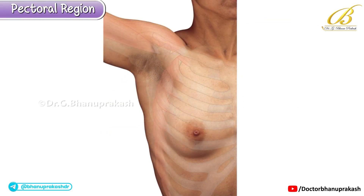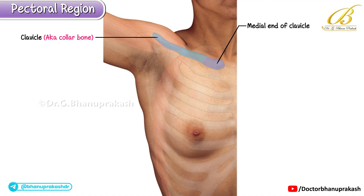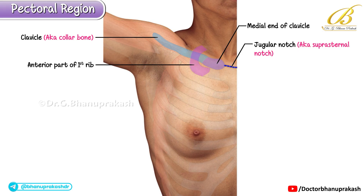Let's take a look at the cadaveric anatomy of the pectoral region, beginning with its surface anatomy. The clavicle, also known as the collarbone, is both visible and palpable along its entire length. Between the medial ends of the clavicles you can locate the jugular notch, also called the suprasternal notch, which lies on the superior border of the manubrium of the sternum. The anterior part of the first rib is concealed beneath the medial portion of the clavicle.